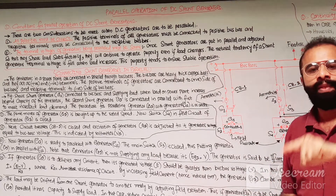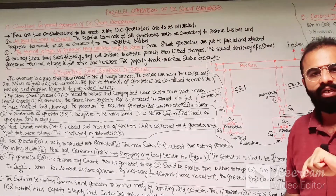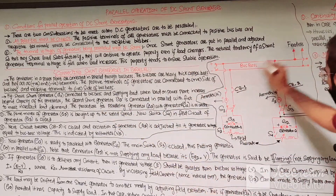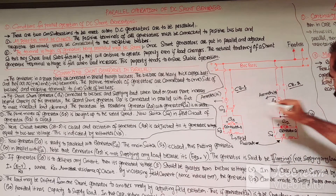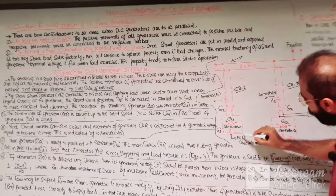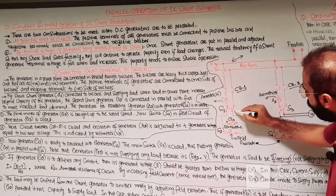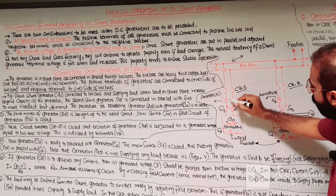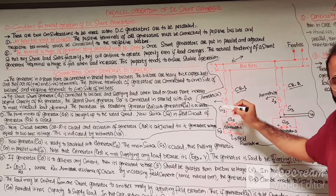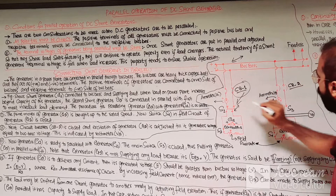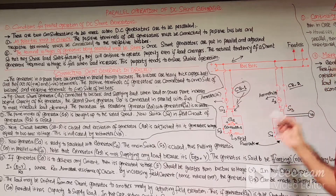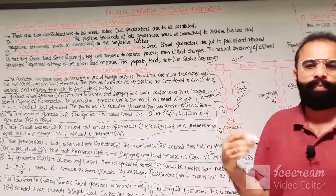The positive terminals of the generators are connected with the positive terminals of the bus bar and the negative terminals of the generators are connected with the negative side of the bus bar. This is the first essential condition of the parallel operation of DC shunt generators. In this figure, two generators are connected in parallel with the bus bars. This is the G1 generator with its field circuit, main switch, and ammeter A1 measuring the current delivered to the bus bar.